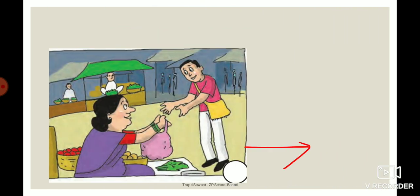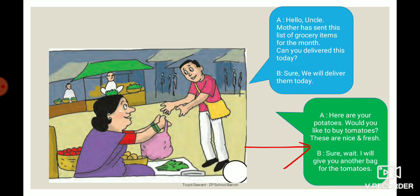Here is one picture for you and you have to find out which is the suitable conversation — first or second? Second — very good. The second conversation is suitable for this picture. Here A says, 'Here are your potatoes. Would you like to buy tomatoes? These are nice and fresh.' Then B says, 'Sure. Wait, I will give you another bag for the tomatoes.' So here you can see potatoes, tomatoes, and a bag — so this is the correct conversation for this picture.